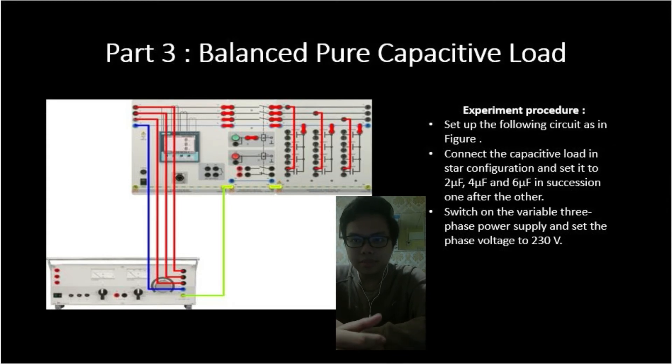So the second one is to connect the capacitive load in star configuration and set it to 2 microfarads, 4 microfarads and 6 microfarads in succession, one after the other. So this is the 2 microfarads here. This is 4 microfarads and this is 6 microfarads. We just have to follow this guideline that has been given.